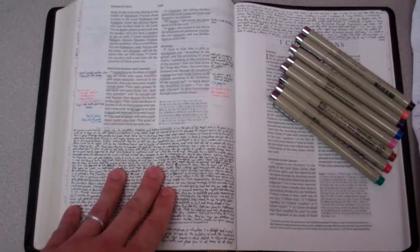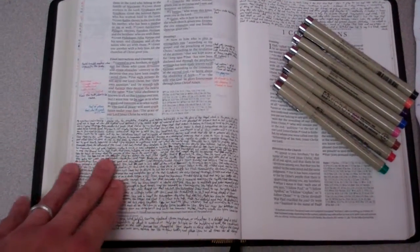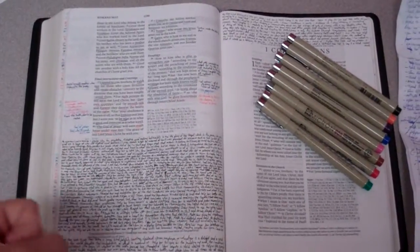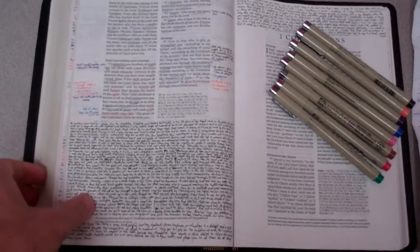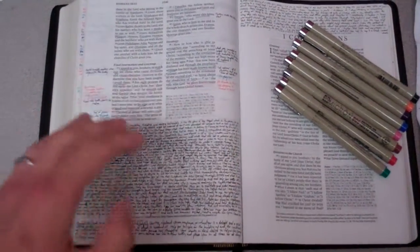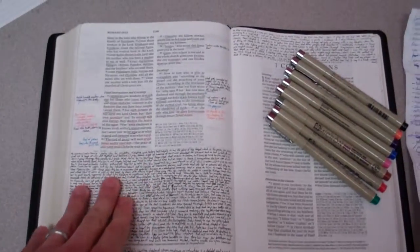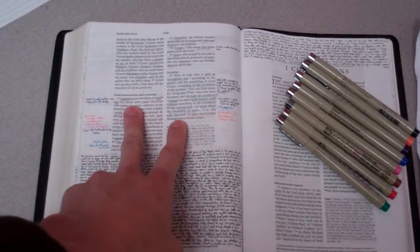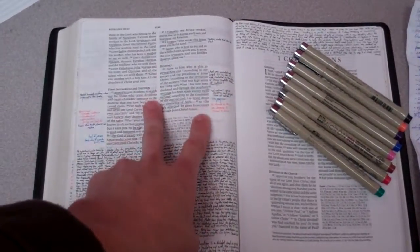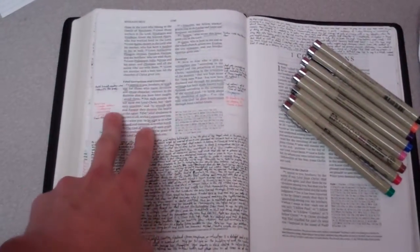This is the ESV Wide Margin Reference Bible in Top Grain Leather. They have them now in Heirloom Edition, which is even better, but it wouldn't be red-letter. As well as, there's a lot of new good ones coming out, and there are some others out there that are really good. The only reason I go with a double column here is because it has great inside margins. Otherwise, I believe note-taking Bible should be a single column.